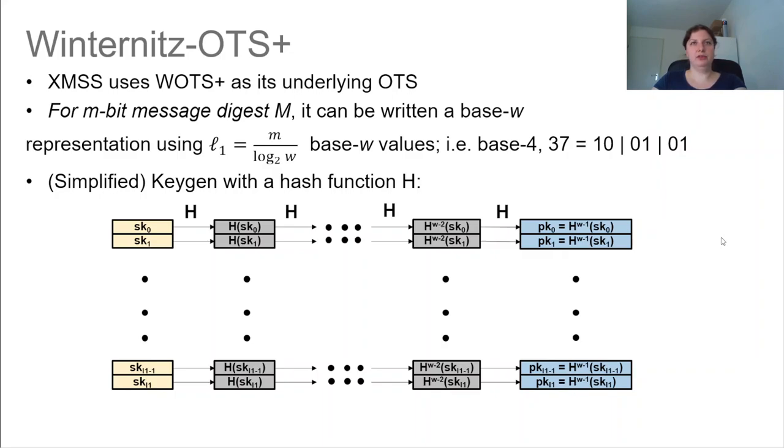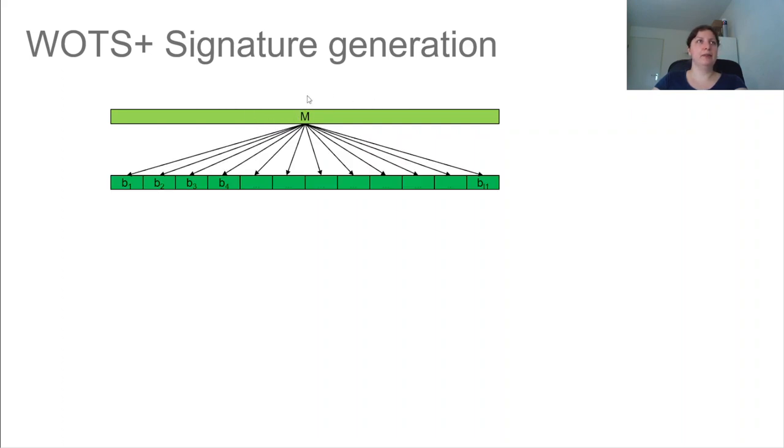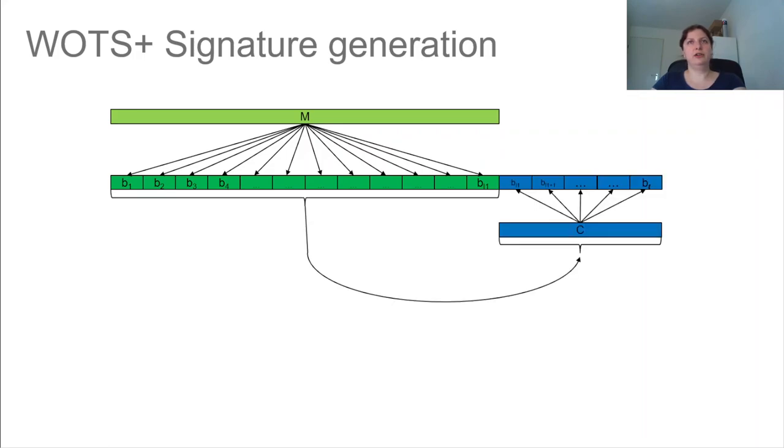So this seems pretty simple. But once we have these secret keys and public keys, we of course want to sign the message with them. So how this works is as follows. We have this message digest M here at the top. And we also split that up into these base W bit chunks.